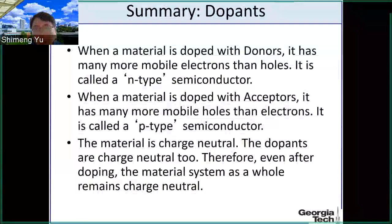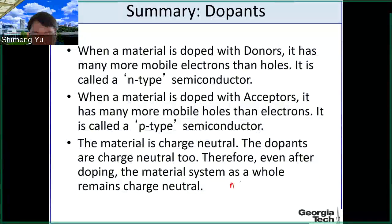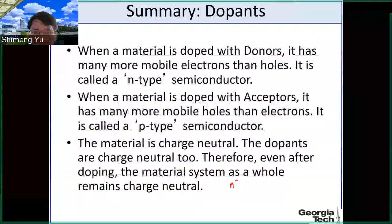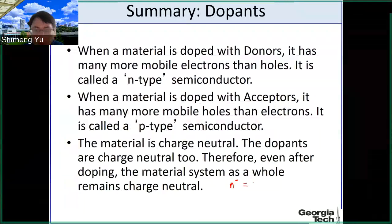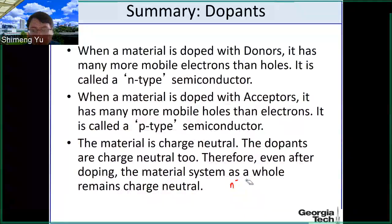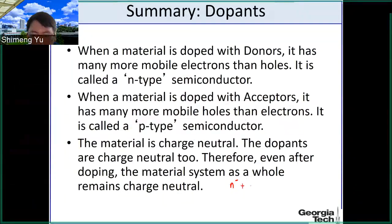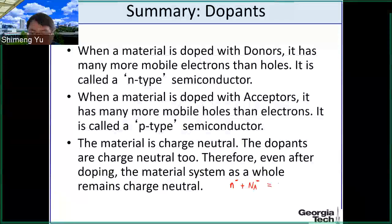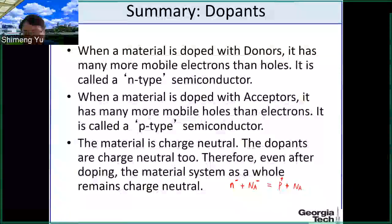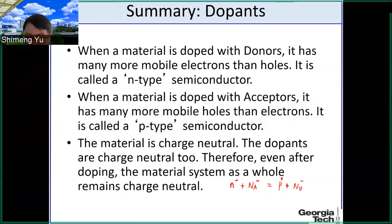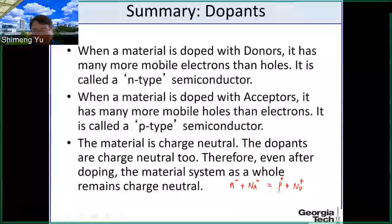Looking at the species or particles in the system: you have electrons (negative charge), and if you do p-type doping you have the boron center (also negative charge). On the positive side you have holes (positive charge), and the donor center — the phosphorus atom — carries a positive charge. So the total negative charge always equals the total positive charge, maintaining charge neutrality.